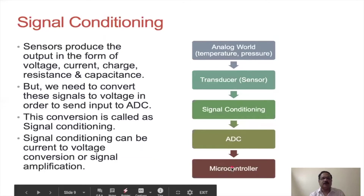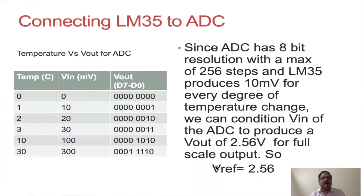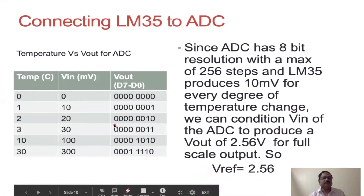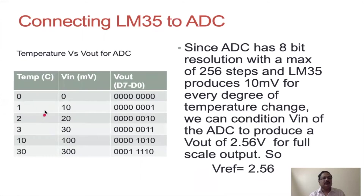From the table, if the temperature is 0°C, we get 0 millivolts from the sensor, and the digital output on D0 to D7 lines is 00000000.